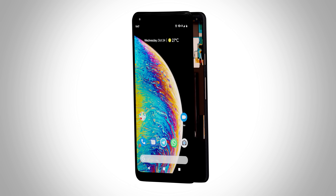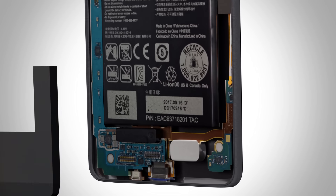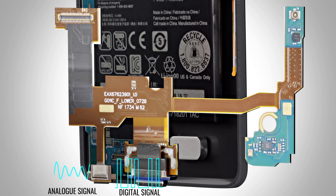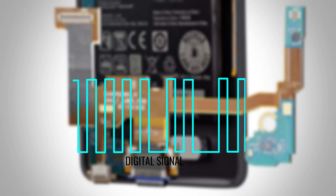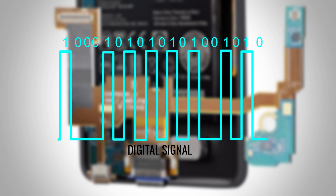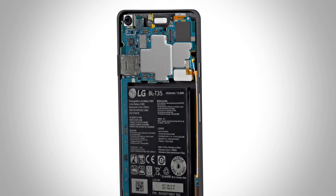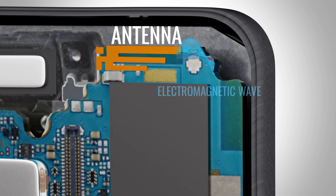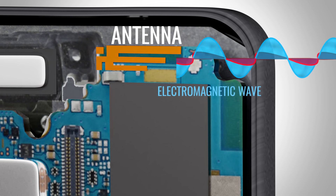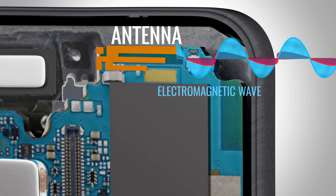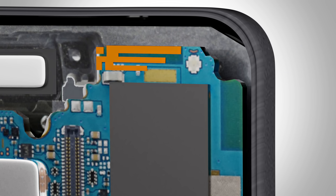When you speak on your phone, your voice is picked up by your phone's microphone. The microphone turns your voice into a digital signal with the help of a MEMS sensor and IC. The digital signal contains your voice in the form of zeros and ones. An antenna inside the phone receives these zeros and ones and transmits them in the form of electromagnetic waves. Electromagnetic waves transmit the zeros and ones by altering the wave characteristics, such as the amplitude, frequency, phase, or combinations of these.